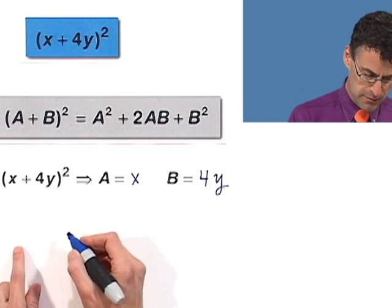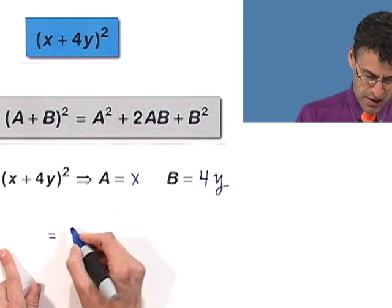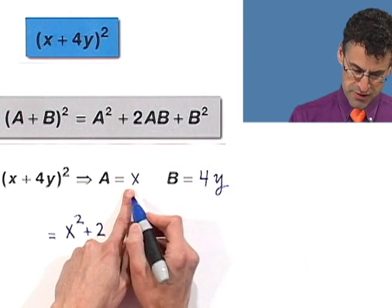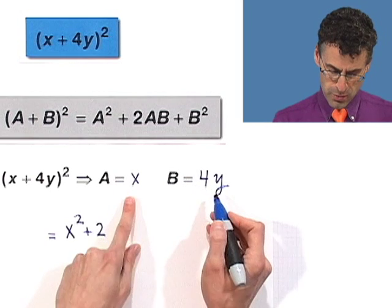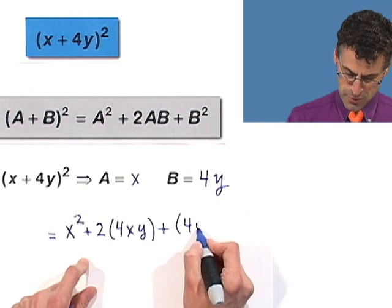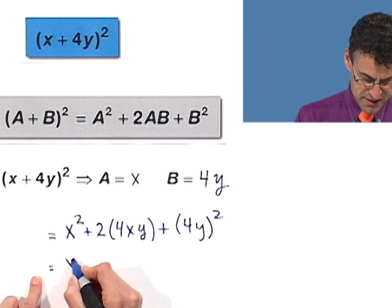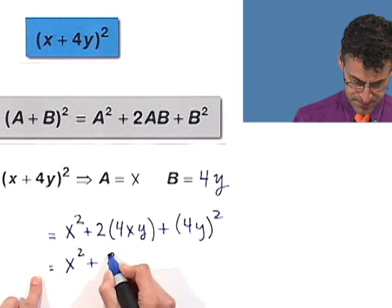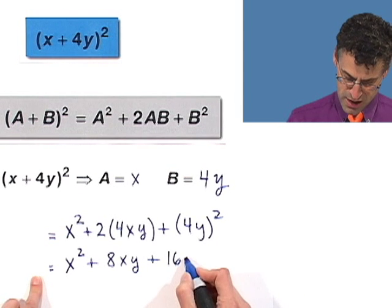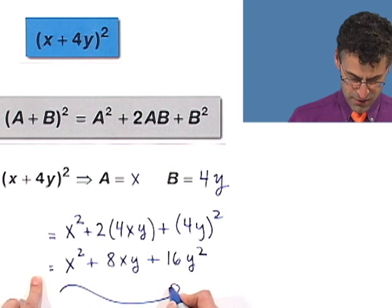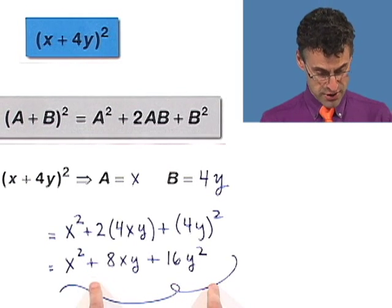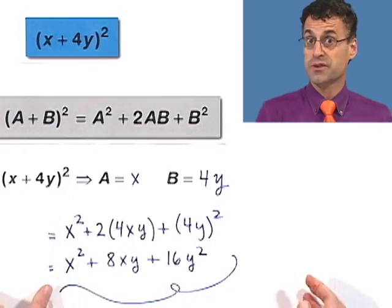If you plug that into the formula, this equals a squared, that's x squared, plus 2 times ab. That's 2 times x times 4y, which is 8xy, plus b squared, which is 4y squared. So square the 4, I get 16. Square the y, I get y squared. The answer is x squared plus 8xy plus 16y squared. You could check by foiling this out carefully.